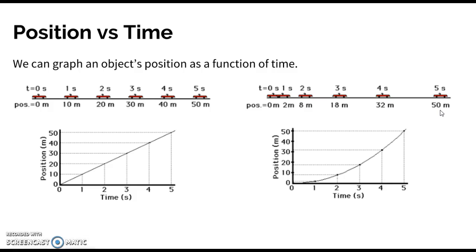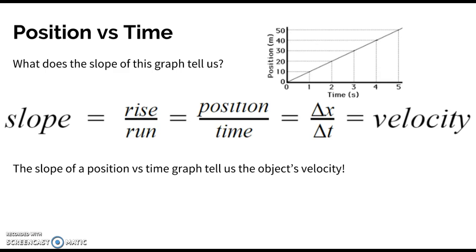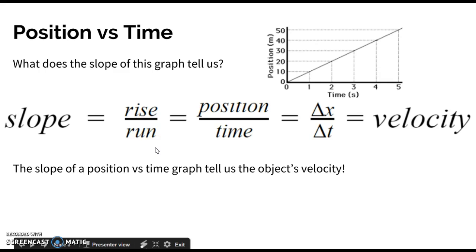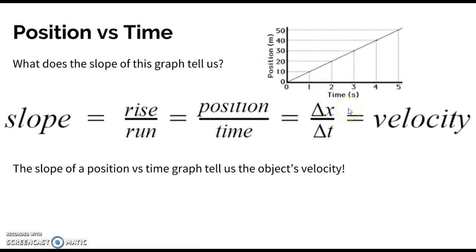One obvious thing we can see from a position versus time graph is the object's position at a certain time. We can also gather information from the slope. Slope is rise over run — our rise is the y-axis, which is position, divided by our x-axis, which is time. More specifically, we're dealing with changes, so it's change in position over change in time — and that's velocity.